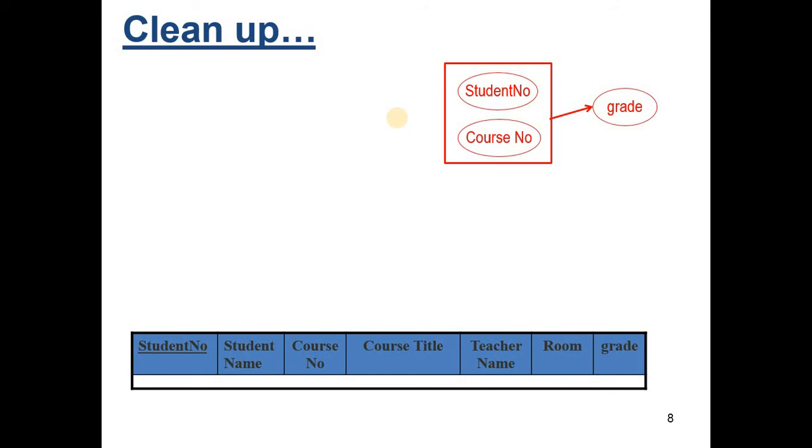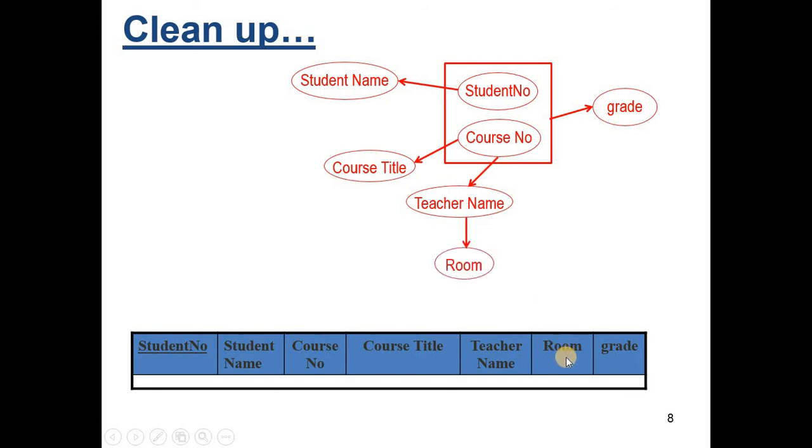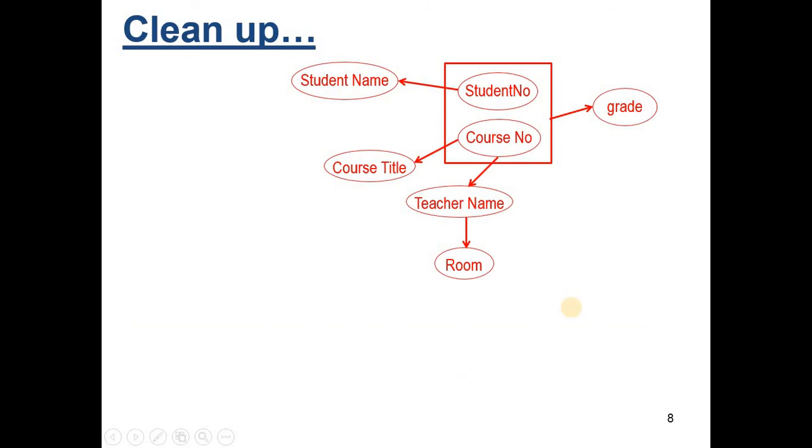OK, now I take all of my data again and all those relationships between the data again and I rewrite it in a neater way to be able to see where we are. So the student number determines the student's name. And the course number determines title and teacher. The teacher's name determines the room. There it is. And we have all of our attributes in a single diagram. Sometimes this diagram is called a determinant diagram because it shows every determinant, every attribute from our data and every determinant.